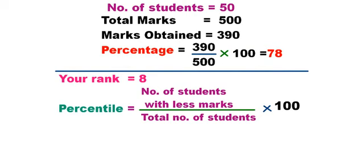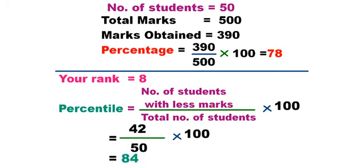For percentile, the formula is: number of students with less marks divided by total number of students into 100. If your rank is 8 out of 50, then in the denominator you get 50. If you calculate this, you get 84 percentile.